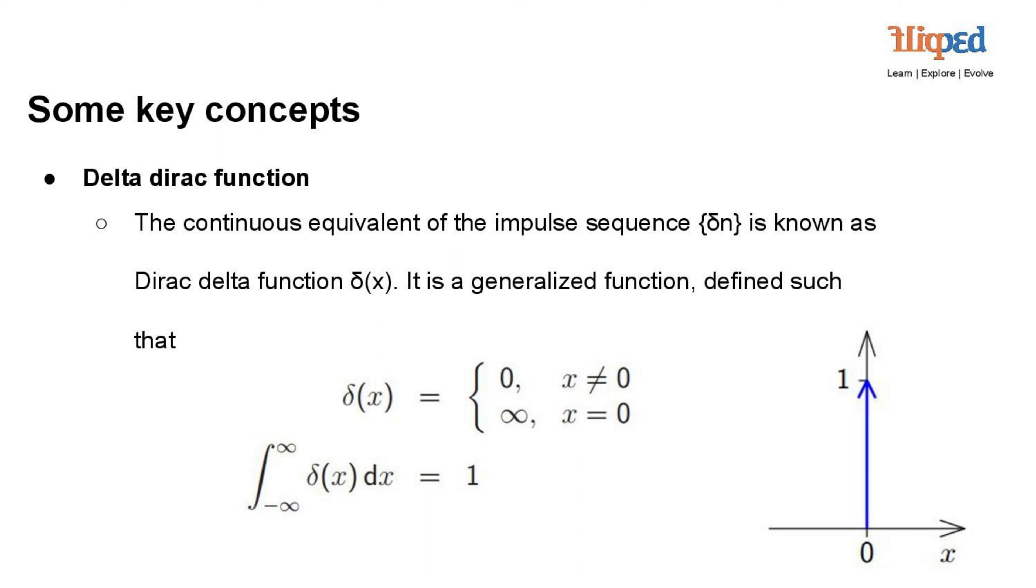In essence, the Dirac delta function acts as a point mass concentrated at the origin, x equals zero, with an infinite peak and zero width. It is used in signal processing and engineering to model impulses, impulse responses, and as an idealized representation of a unit impulse or an instantaneous event.